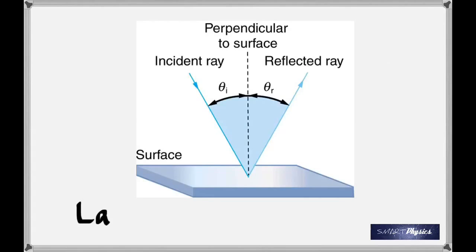The second law, which makes it very convenient for us geometrically, is that all three — the incident ray, the normal, and the reflected ray — all lie in the same plane. As you can see, it's all in the plane of the board. Because if only the first law was satisfied, the reflected ray could have gone in any plane. So those are the two laws of reflection: the angle of incidence equals the angle of reflection, and the incident ray, reflected ray, and perpendicular lie in the same plane.